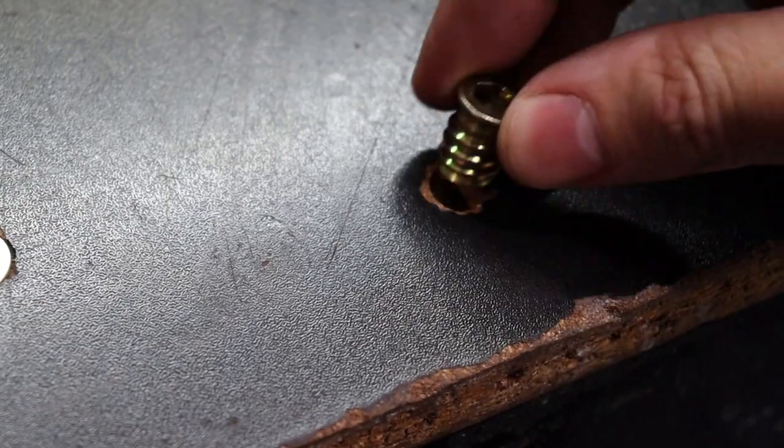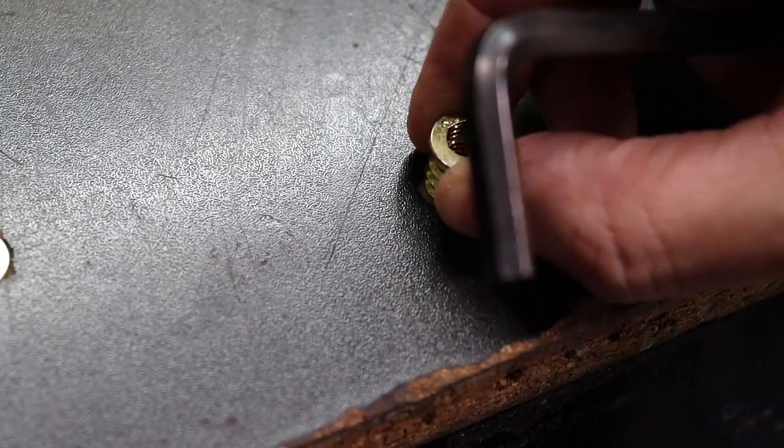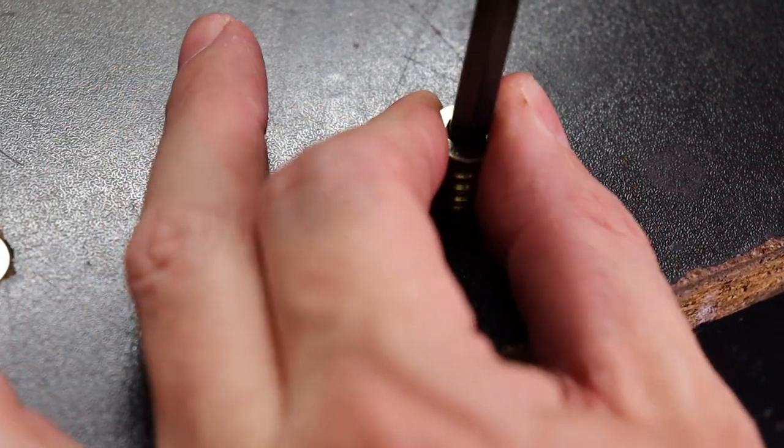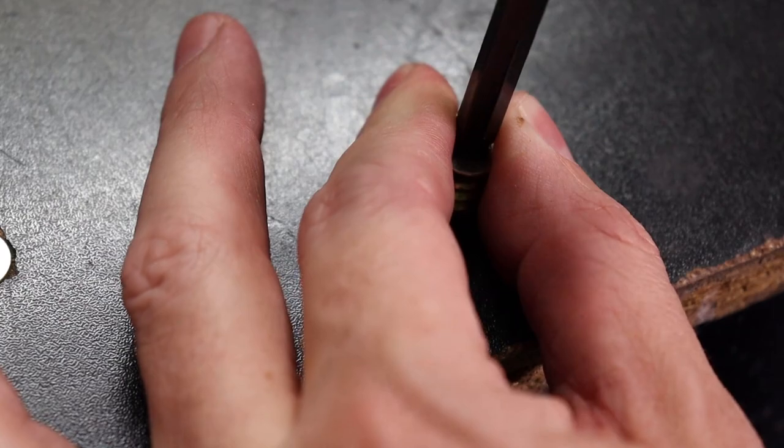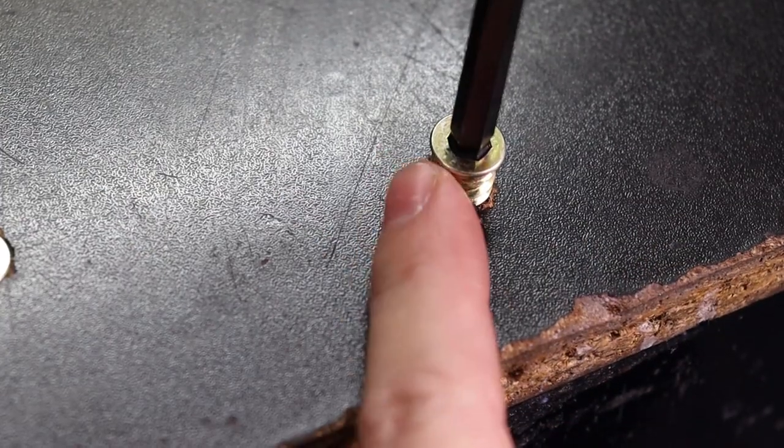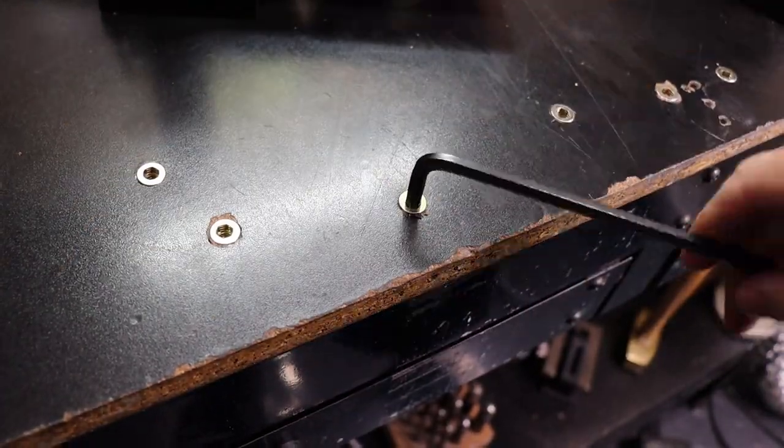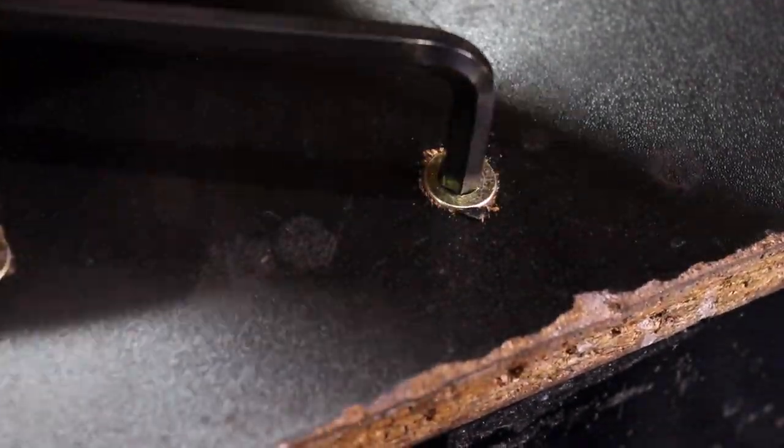Next thing I need to do is actually take my insert and start threading it in. Take my allen key and get it going. Try to make it go in as straight as possible. There we go and then I'm going to tighten it a little bit more to get it as flush as I can into the table.